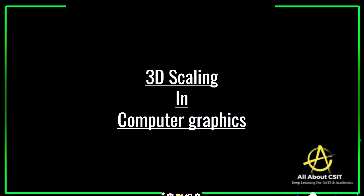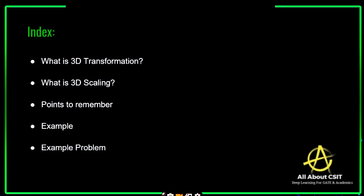Today we will see another concept in computer graphics: 3D scaling. Let's look at the topics we are going to discuss. First, I'll explain what exactly 3D transformation is and the different types of 3D transformations. One of those types is 3D scaling. We will see what exactly 3D scaling is, some important points to remember, when an object increases or decreases its size, and work through an example problem.